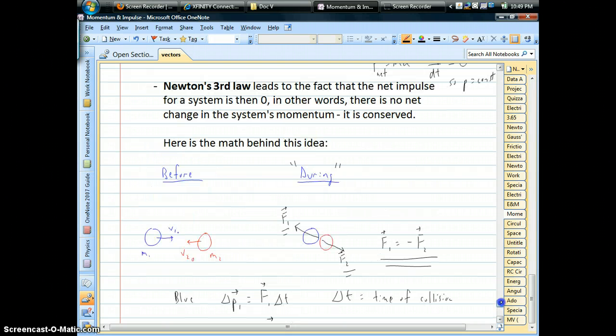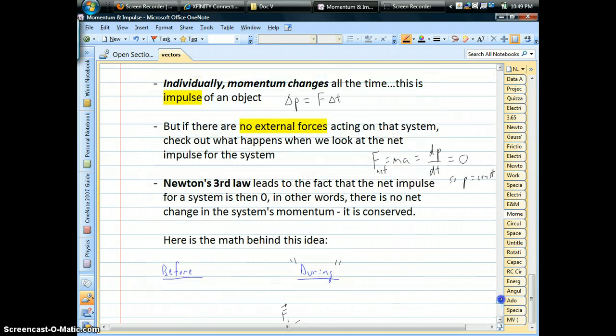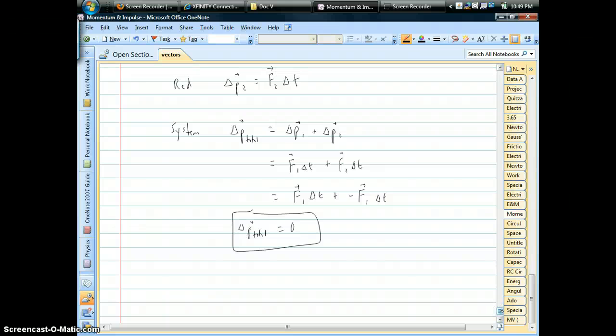So again, key ideas: we're talking about impulses for the individual objects, but because of the third law of motion, those impulses will be equal and opposite each other, and therefore, for the system, momentum is conserved during that collision. So I hope this helps, and until next time, we'll see you later.